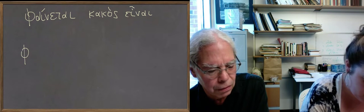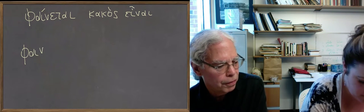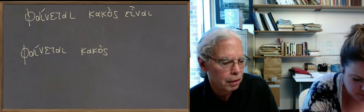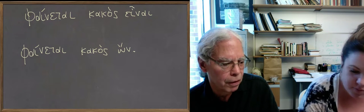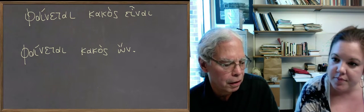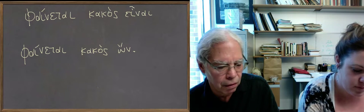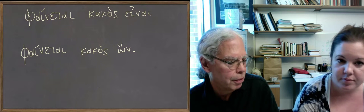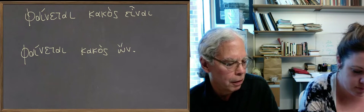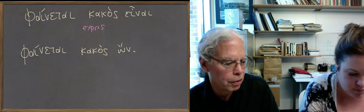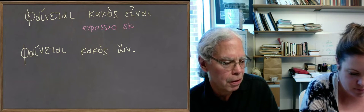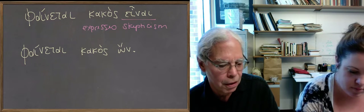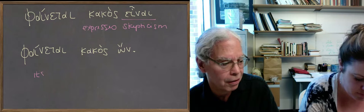Phinatai cacos on. So in the first example, phinatai cacos ani, you've got phinatai, the middle form, with an infinitive, complementary infinitive. And that means he appears to be evil, expressing skepticism. And the other one, phinatai cacos on, means he is apparent being evil. In other words, it is apparent that he is evil.